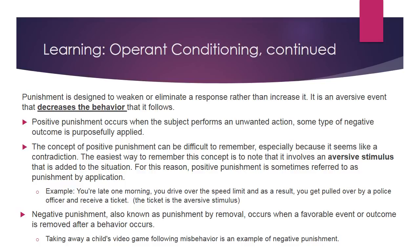Punishment is designed to weaken or eliminate a response rather than increase it. Positive punishment occurs when an unwanted action is performed and some type of negative outcome is purposefully applied — it involves an aversive stimulus added to the situation, sometimes referred to as punishment by application. For example, you are late, drive over the speed limit, and get pulled over by the police and receive a ticket — theoretically, you will not drive over the speed limit again even if you are late.